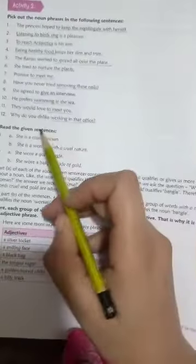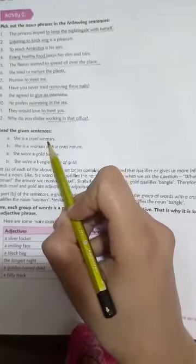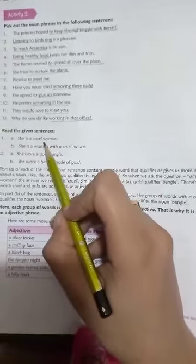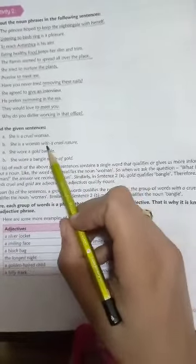Next example: she is a cruel woman. Cruel is a word that qualifies the noun woman. So cruel woman - cruel is an adjective here. Next point is she is a woman with cruel nature. See, with cruel nature.